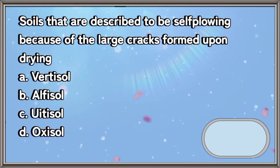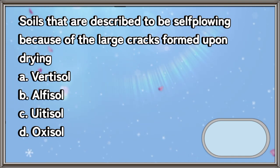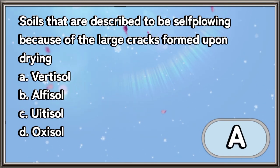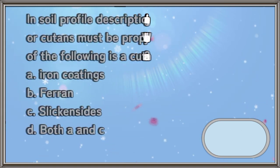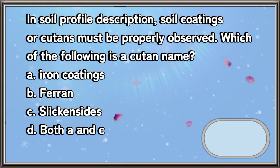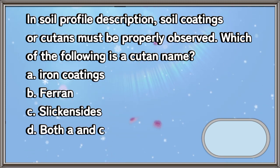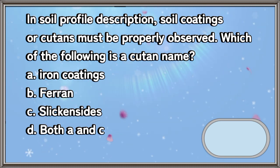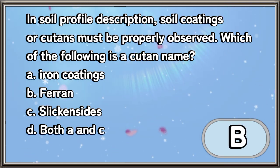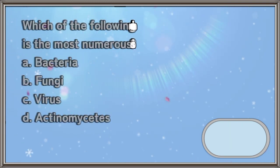Soils that are described as self-plowing because of the large cracks formed upon drying: a) vertisol, b) alfisol, c) eudesol, d) oxisol. The answer is letter A. In soil profile description, soil coatings or cutans must be properly observed. Which of the following is a cutan name: a) iron coatings, b) ferrans, c) slickensides, d) both A and C. The answer is letter B.